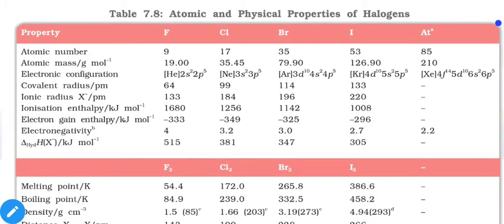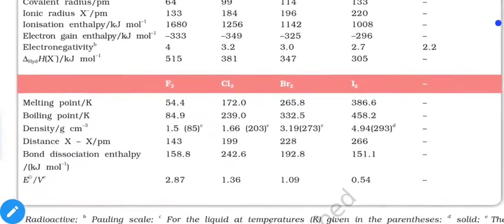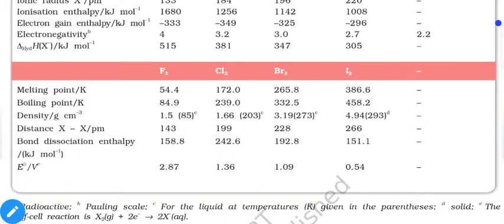All halogen elements are highly electronegative, giving them comparatively high electronegativity values. Hydration enthalpy refers to the energy absorbed when the element dissolves in water; these values are positive, indicating an endothermic process. In the second part of the table, melting points, boiling points, densities, bond distances, bond dissociation enthalpies, and electrode potentials are mentioned. All these elements are usually in the gaseous state at normal temperature.